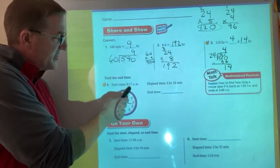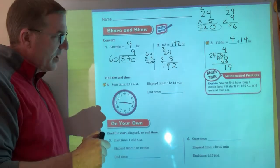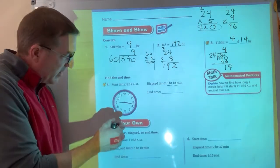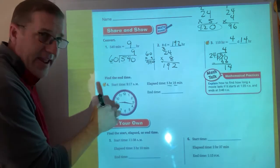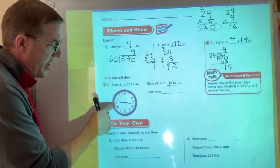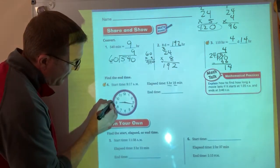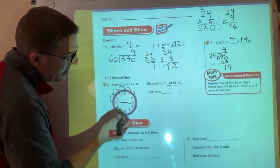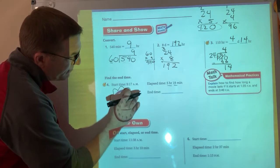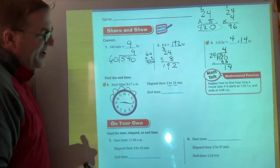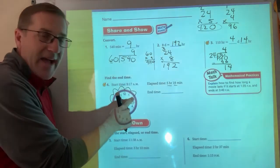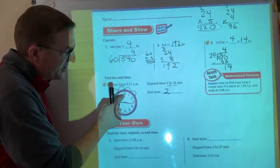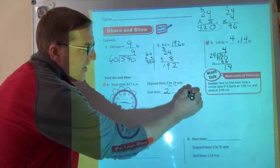So it says starting time is 9:17 and my elapsed time is five hours and 18 minutes. So if I'm going to use a clock, there's my hour hand is the short hand on an analog clock. And I'm going to jump it five times. One, two, three, four, five. So I know that it's going to end up at two o'clock. And because I went past 12, it's going to go from AM to PM.